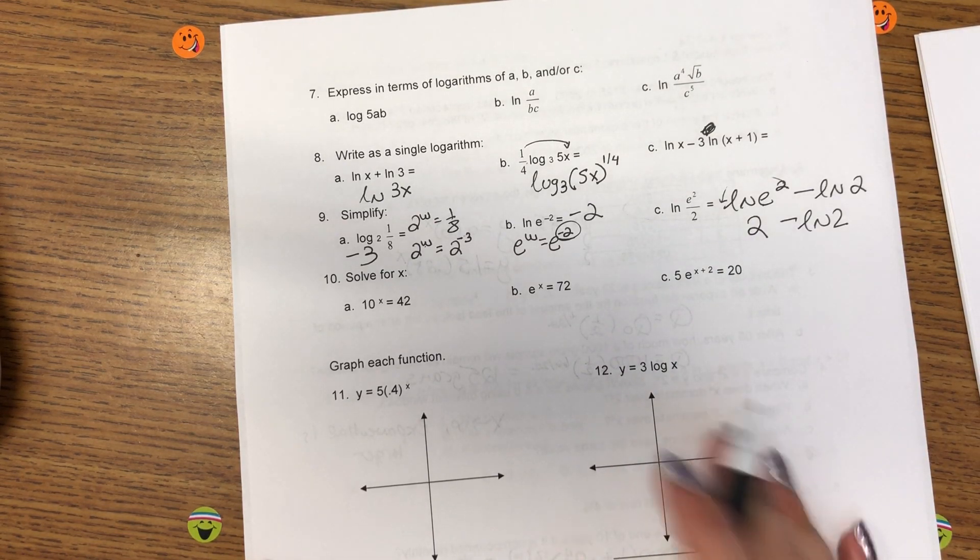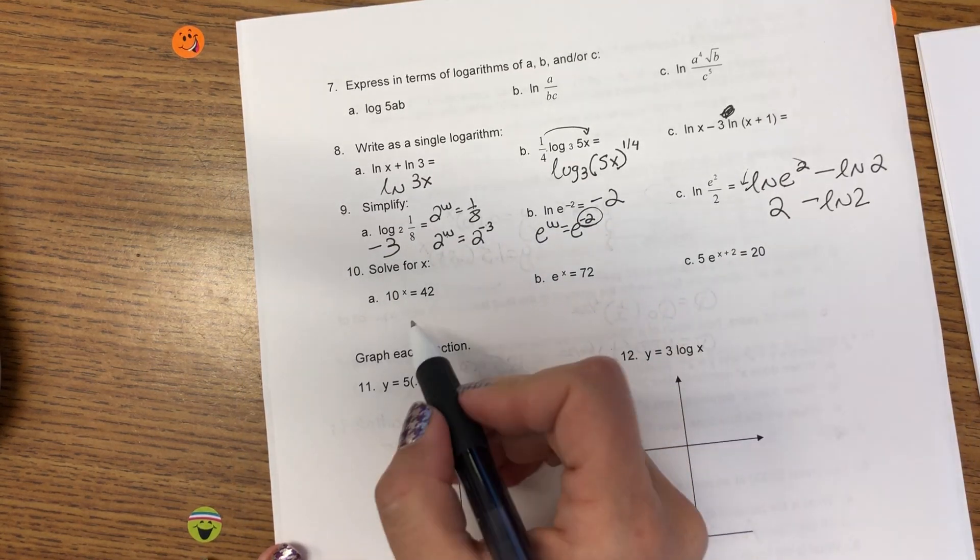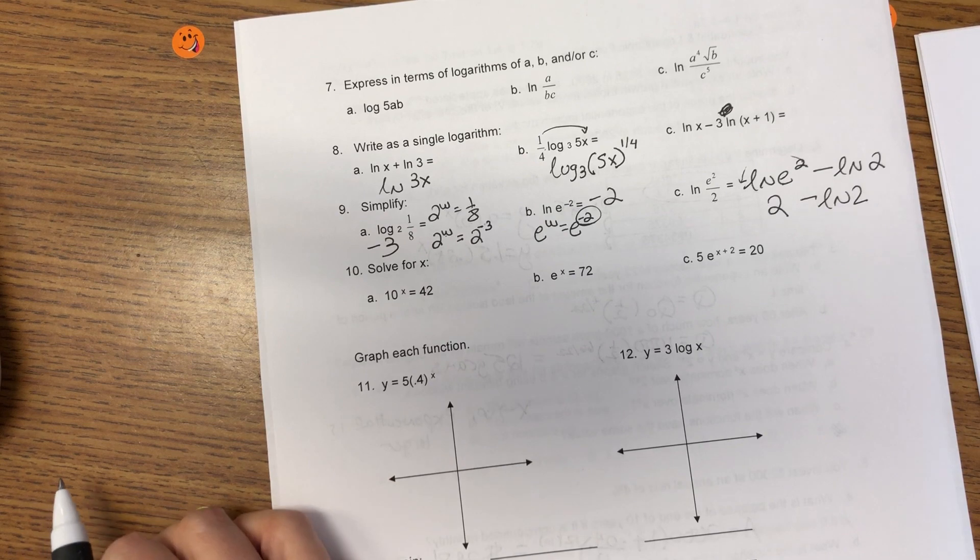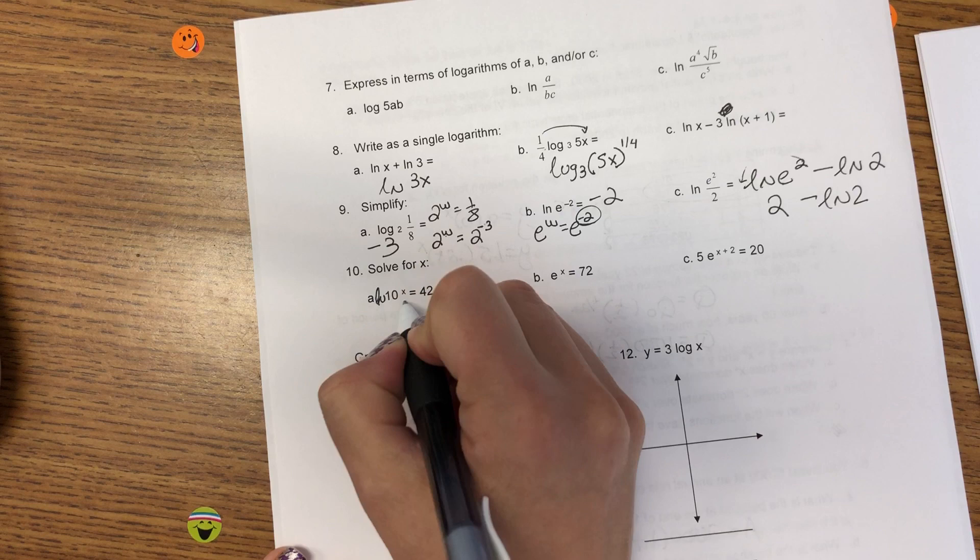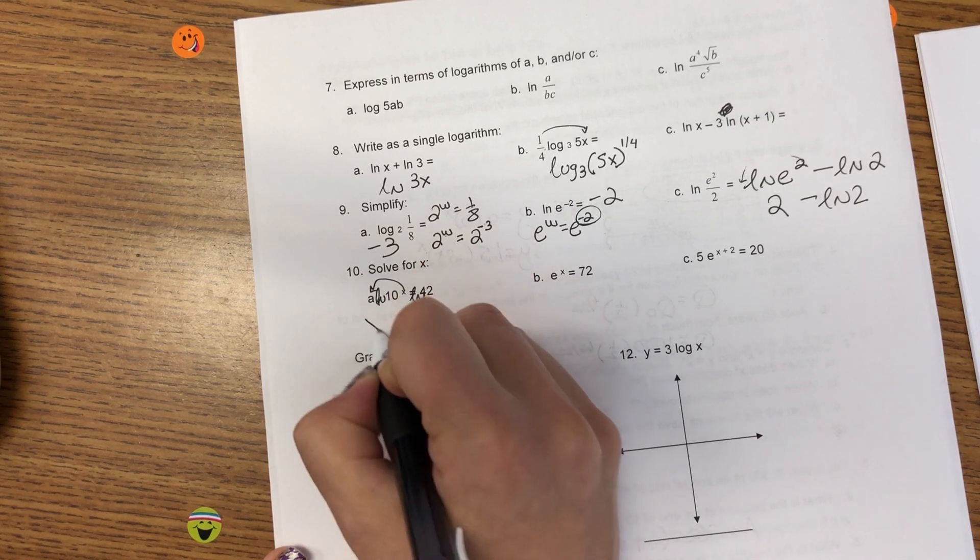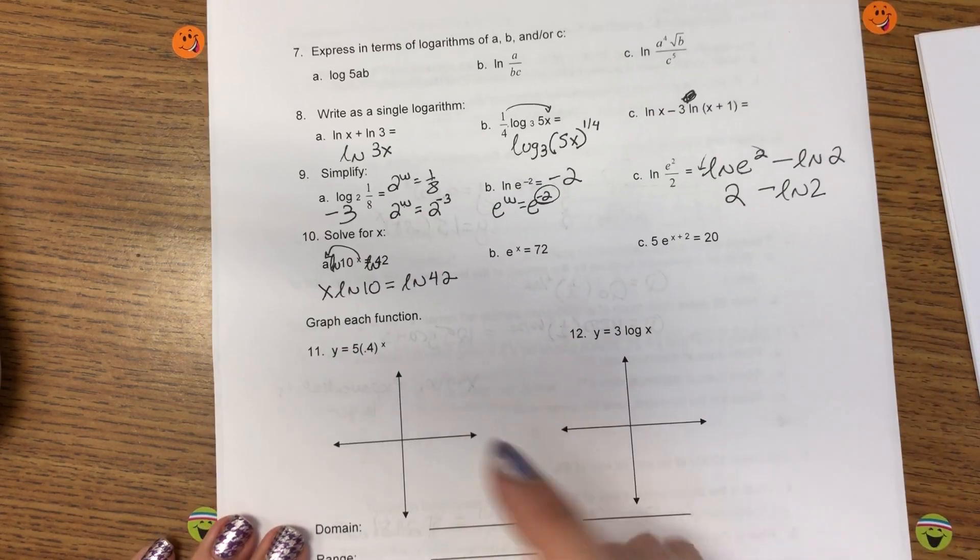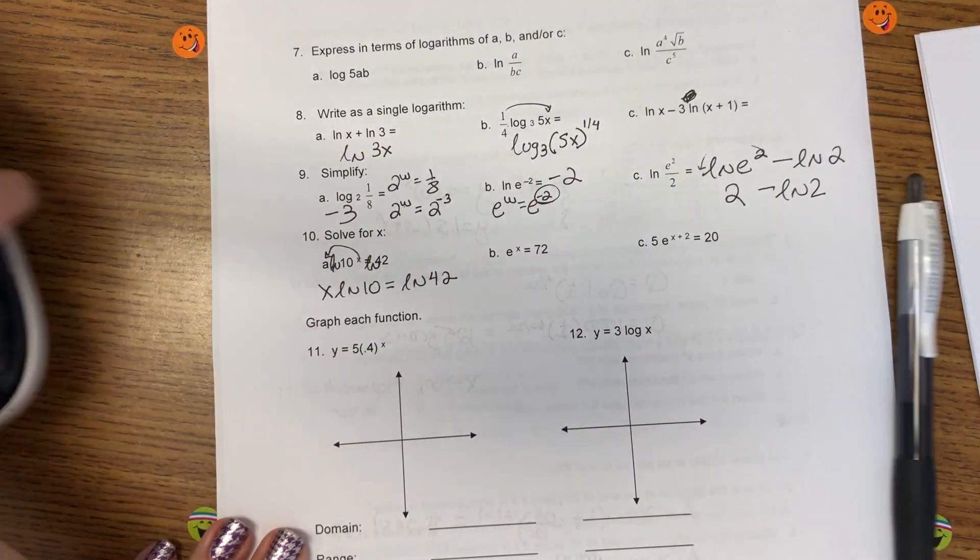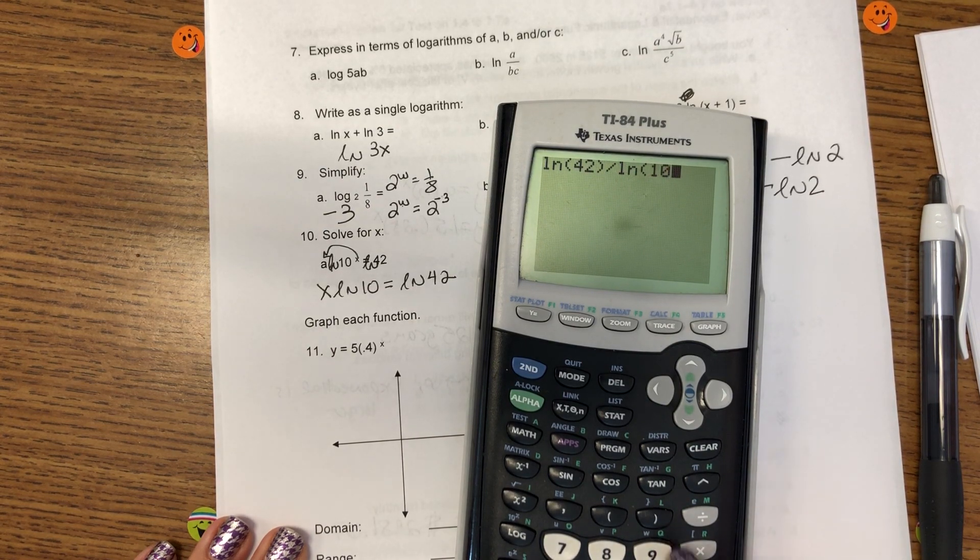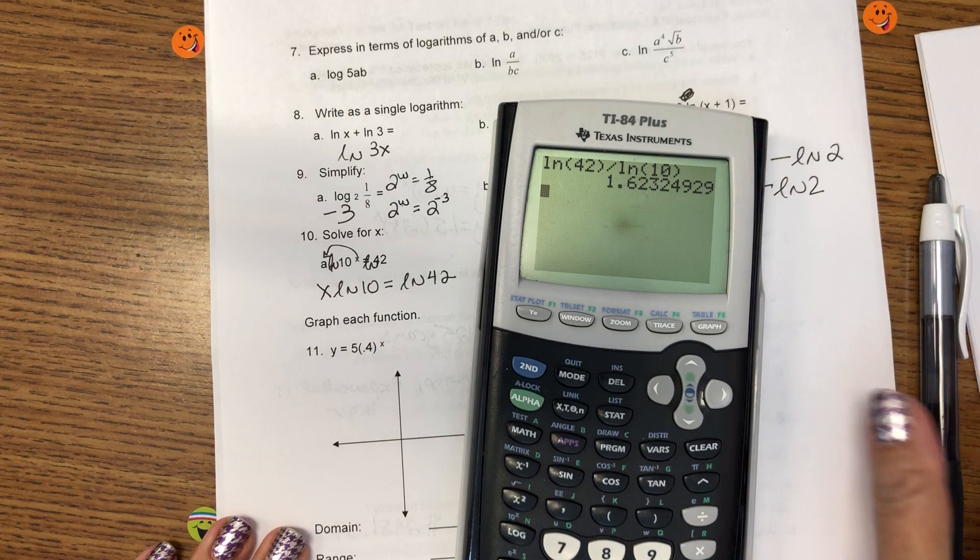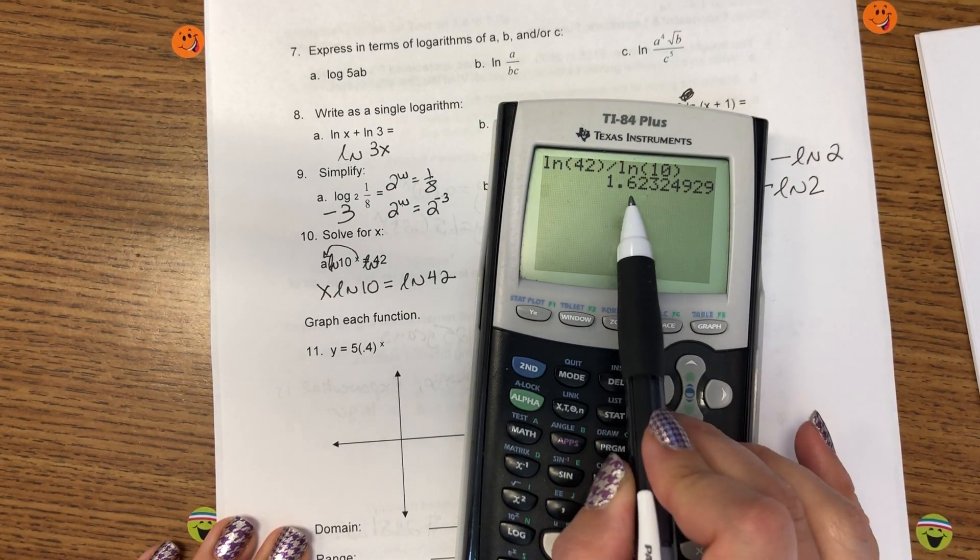Solve. There's a few different strategies you can use for solving. I like to stick with the same one where I ln both sides. When I do that, and I say ln, ln, that allows the x to become the coefficient. So, now to finish solving, I can divide ln of 10 to the right and get 1.623, the whole thing, round to three decimal places. So, 1.623.